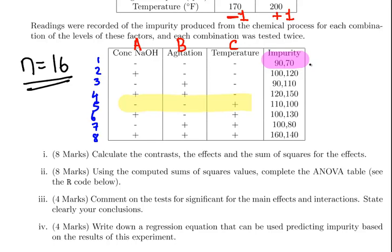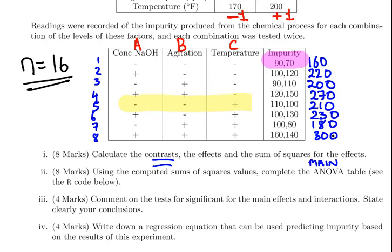What we're going to do here is, this is quite a long calculation, so I'm just going to bite off the first bit. Calculate the contrasts, the effect, and the sum of the squares for the main effects. I'm only going to calculate the contrasts for the main effects in this case. First, I'm going to sum up the impurities: 160, 220, 200, 270, 210, 230, 180, and 300.